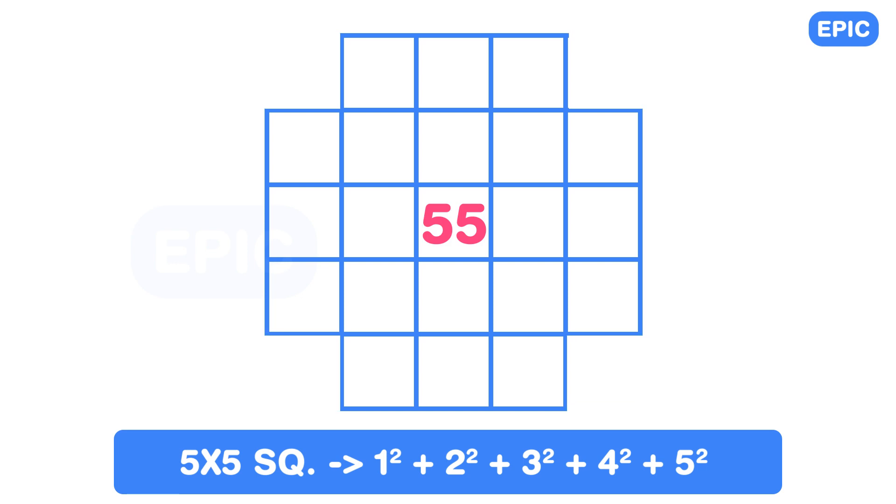Now we have removed 4 of the smallest squares from the 4 corners. Can you count the total number of squares now? Give it a try.